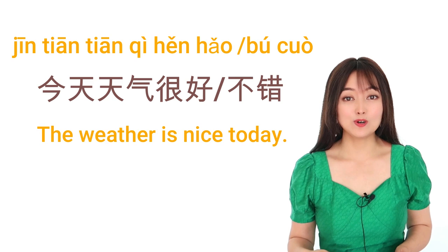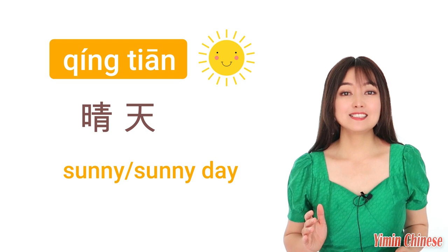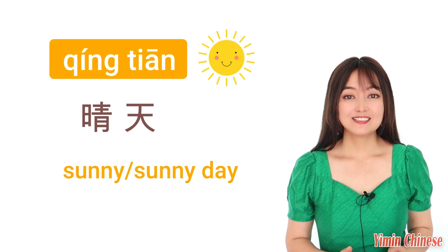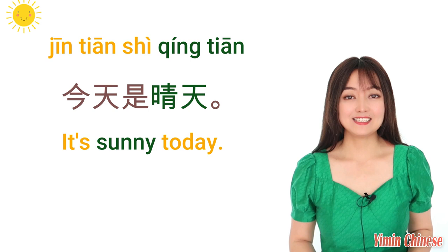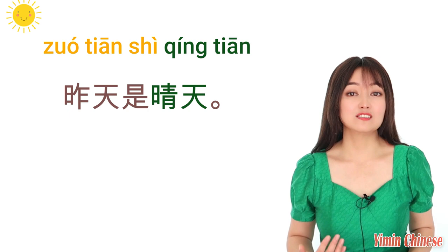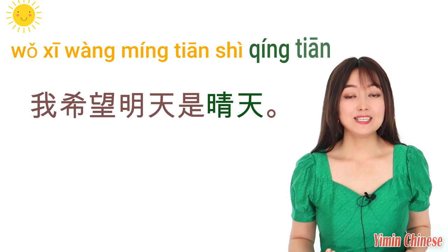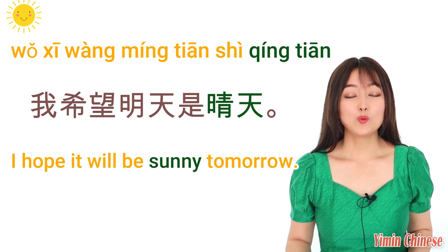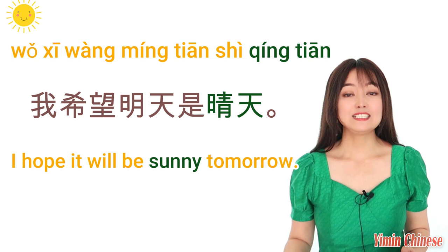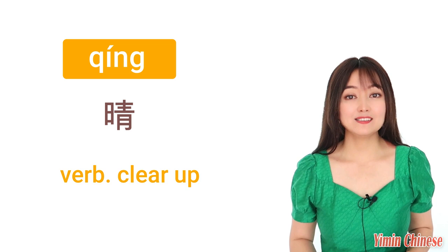Let's get more specific. First, sunny days. Sunny day is 晴天。比如说，今天是晴天。It's sunny today. 今天是晴天。或者昨天是晴天。It was sunny yesterday. 或者我希望明天是晴天。I hope it will be sunny tomorrow. 晴 also can be a verb meaning clear up — the sun comes out again after being cloudy. 比如说，天晴了。